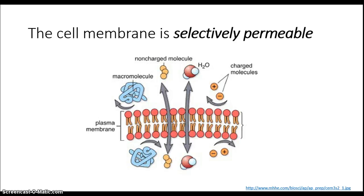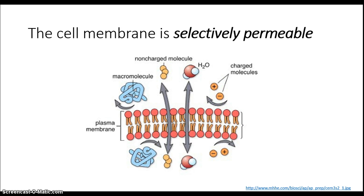When we say selectively permeable, we mean it functions kind of like a screen door — certain materials, usually smaller ones, can get through the membrane relatively easily, but larger ones have a problem getting through. There are also problems that charged particles have, because the hydrophobic part, the long lipid tails of these membrane lipids, actually repels charged particles and prevents them from coming through. Hence, selectively permeable implies that certain materials can get into the cell and others cannot.